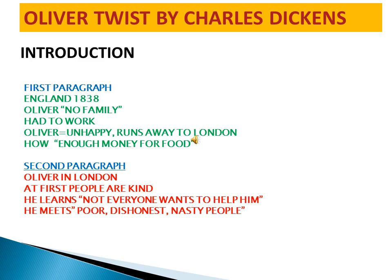In the second paragraph, as you can see, there are some phrases as well. Oliver is in London. At first people are kind to him in the beginning when he meets them. But as time passes, he learns that not everyone wants to help him. He meets poor, dishonest, and nasty people in London.